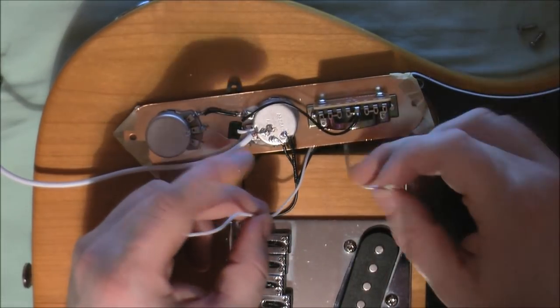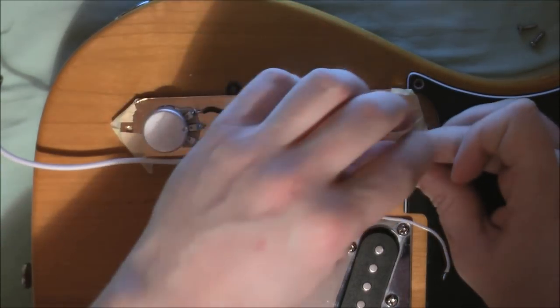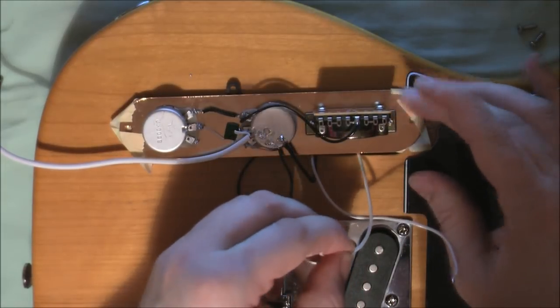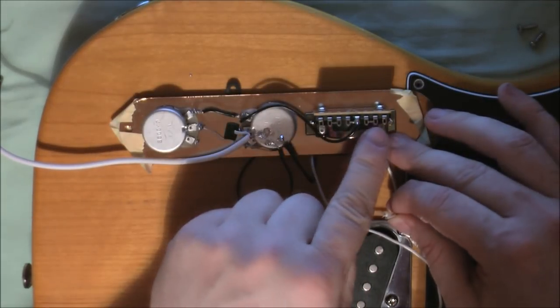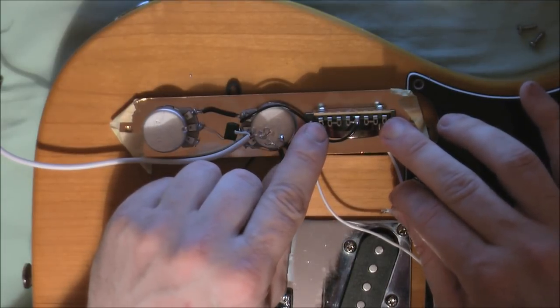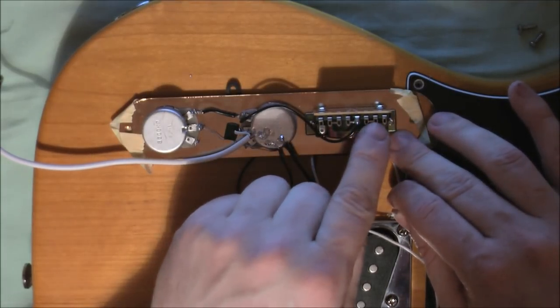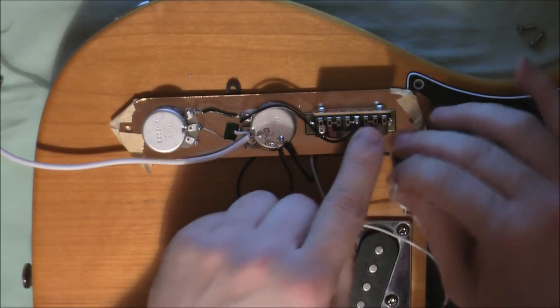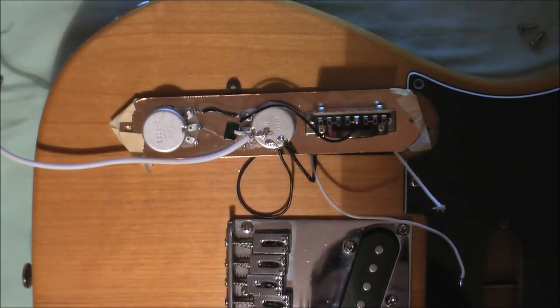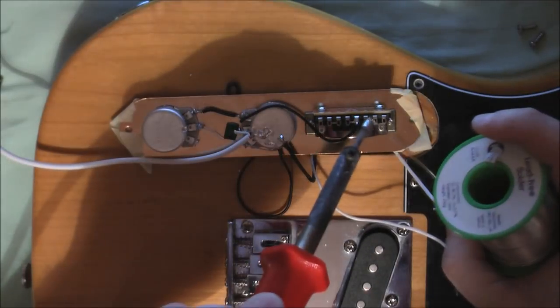Now this one is the neck pickup hot wire and that one goes, as you would probably expect, to this side of the switch. You can see there are three lugs, two of which are connected. The two end ones are redundant on this particular wiring mod. So you're just going to use one of those two there. Doesn't matter which one you use. You just need to connect the neck pickup to one of those. So we're going to use this one.